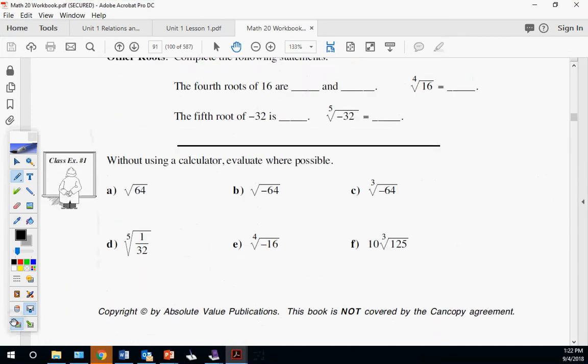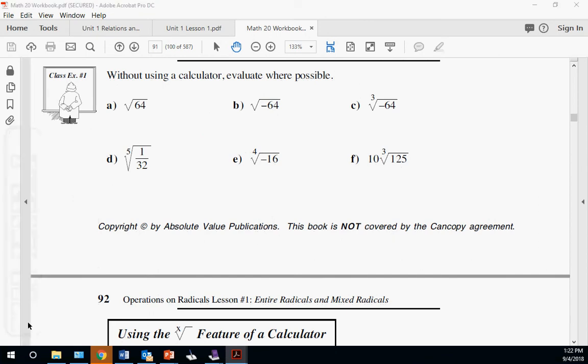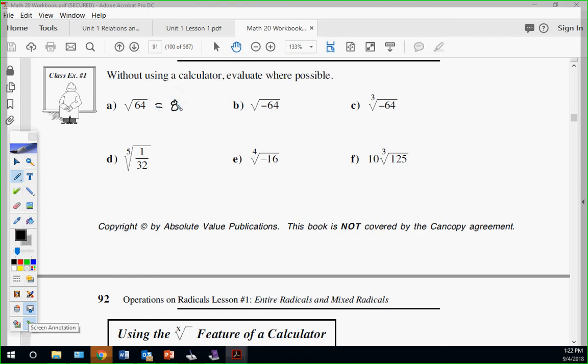Let's finish these off. Tell me: 64 is 8, negative 64 not possible, cube root negative 64 is negative 4. Fifth root of 1 over 32 - you root the top and bottom the same, so fifth root of 1 is 1, fifth root 32 is 2, so it's one half. Can't do even with a negative. This one, we cube root 125, which is 5. The operation is multiplication, so 10 times 5 is 50.